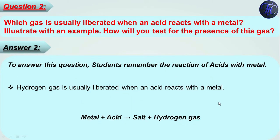Let's see question number 2. Which gas is usually liberated when an acid reacts with metal? Illustrate with an example. How will you test for the presence of this gas? As you saw in the previous question, when acid reacts with metal, hydrogen gas is liberated and salt is produced. Now we have to illustrate with an example.